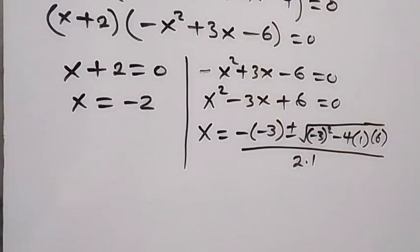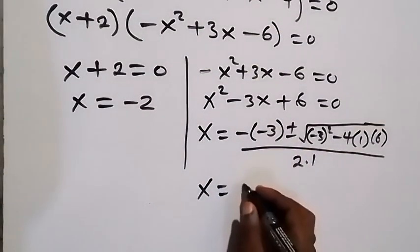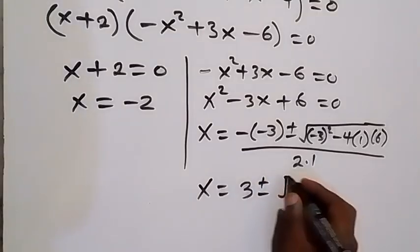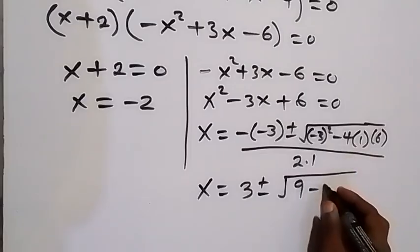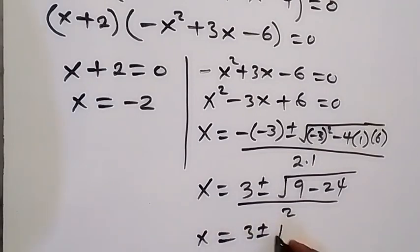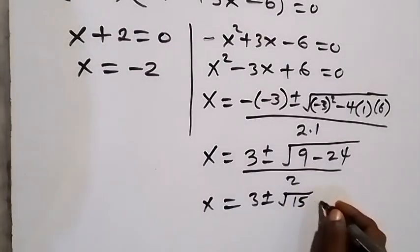Solving this: minus times minus is plus, so we get 3 plus or minus the square root of 9 minus 24, all over 2. That gives us the square root of minus 15 under the radical. Root of minus 15 can be written as root 15 times i. So x equals 3 plus or minus root 15 i, all over 2.